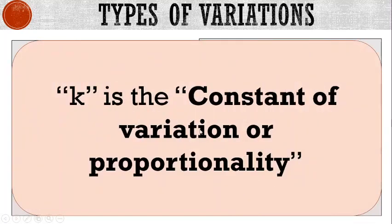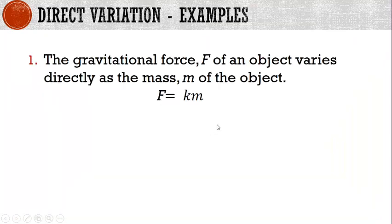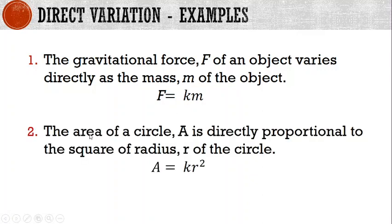In all of those types, k is the constant of variation or proportionality. For direct variation example one, the gravitational force f of an object varies directly as the mass m of the object, so f equals km. In example two, the area of a circle a is directly proportional to the square of the radius, so a equals kr squared.